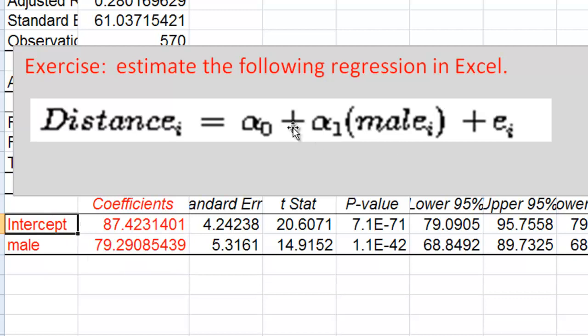And those coefficients are the value of alpha zero and alpha one. For instance, the intercept alpha zero is 87.42. The value of alpha one is 79.29.